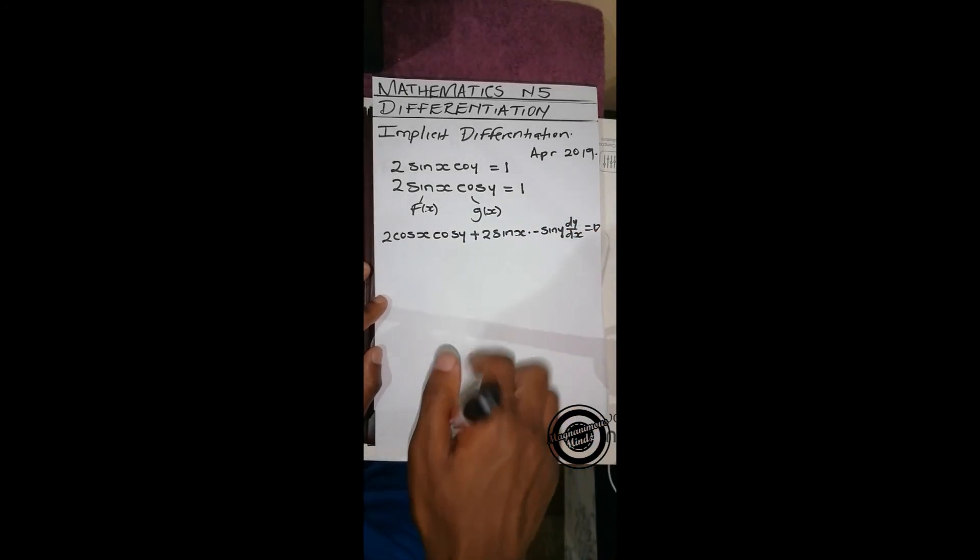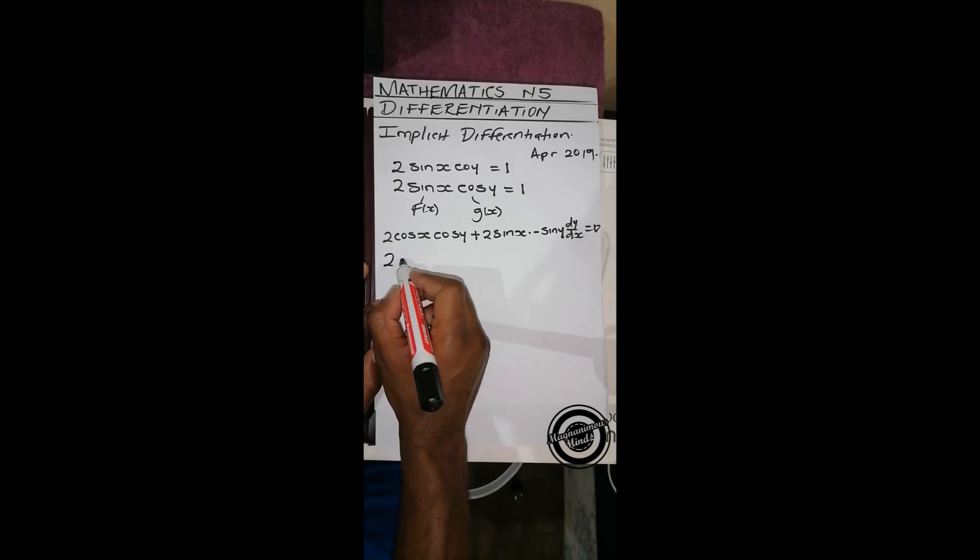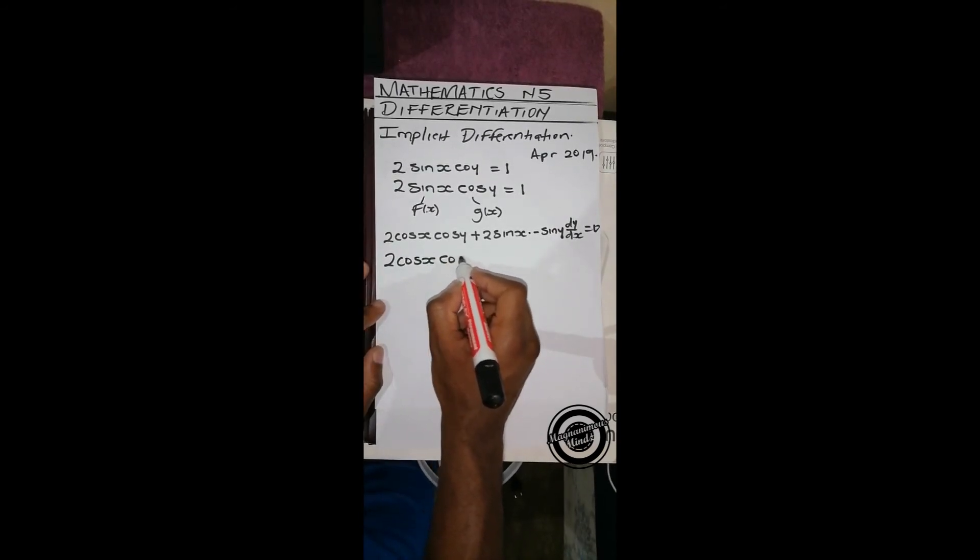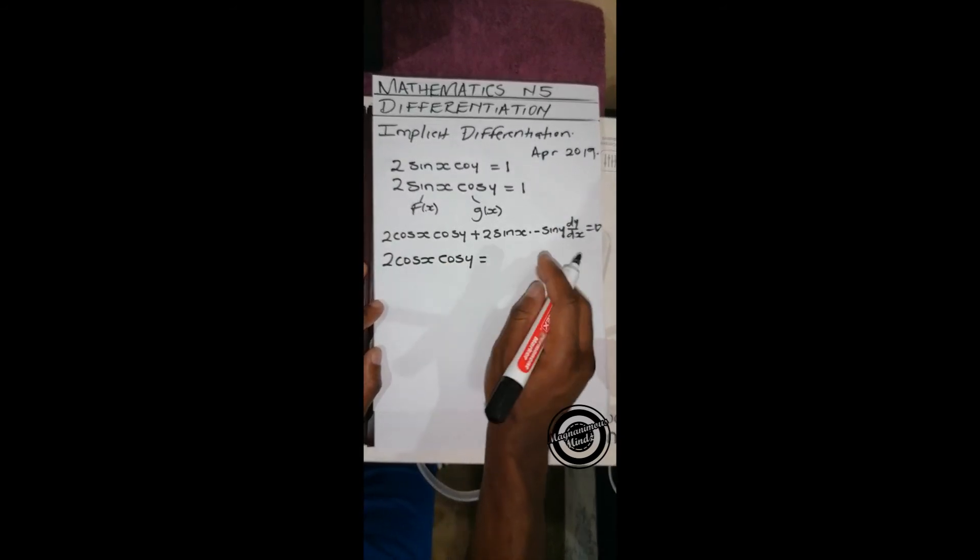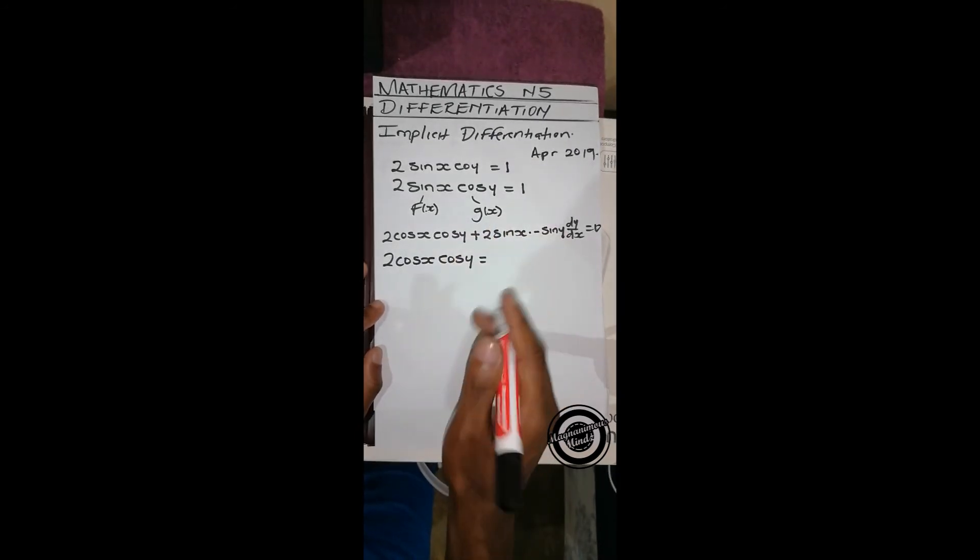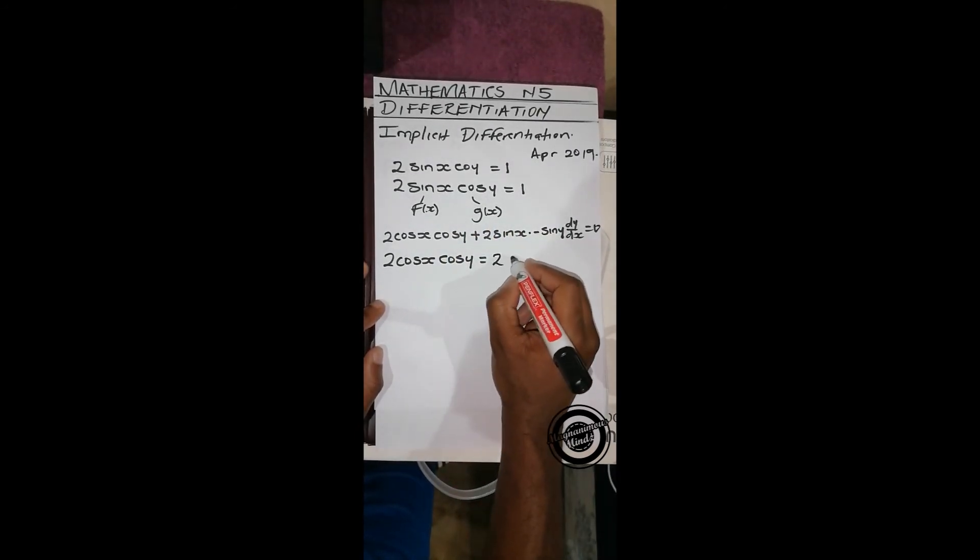to the other side. So we have 2 cos x cos y - this negative will be positive when going to the other side - equals 2 sin x